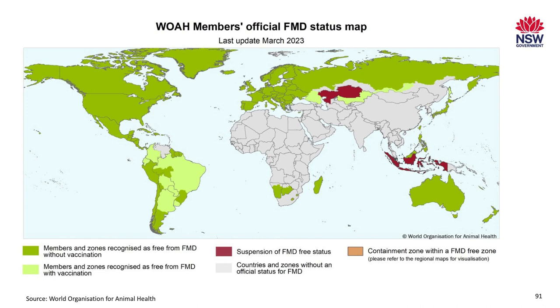This is a map from March this year showing the spread of foot and mouth disease globally. Countries that aren't coloured don't report, so they don't have an official status — it's probably best to assume that FMD is present in those countries. Australia is currently FMD-free with a vaccination-free status, and it's important that we maintain that vaccination-free status, as that will play a part in how we respond to an incursion.